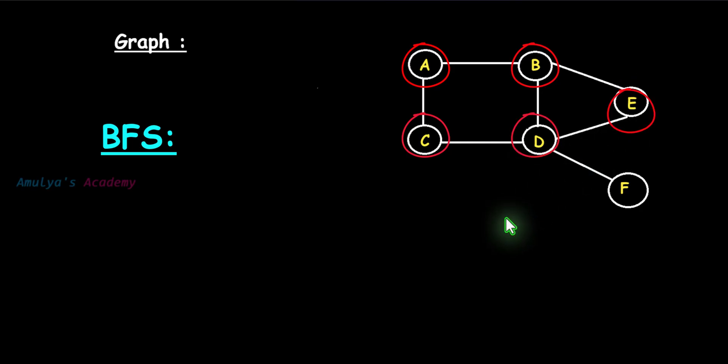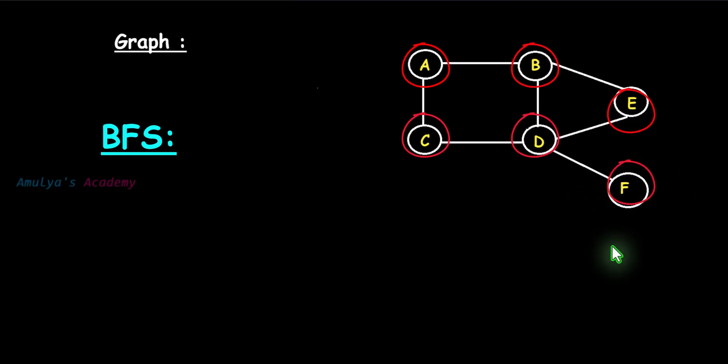Next, we visit all the unvisited adjacent nodes of D and E. The connected node is F, so visit that. Once all nodes of the graph are visited, we stop the traversal. BFS visits nodes nearer to the source node first before exploring nodes further away.